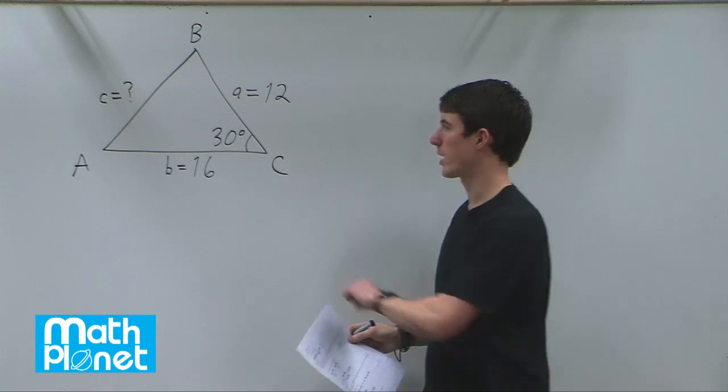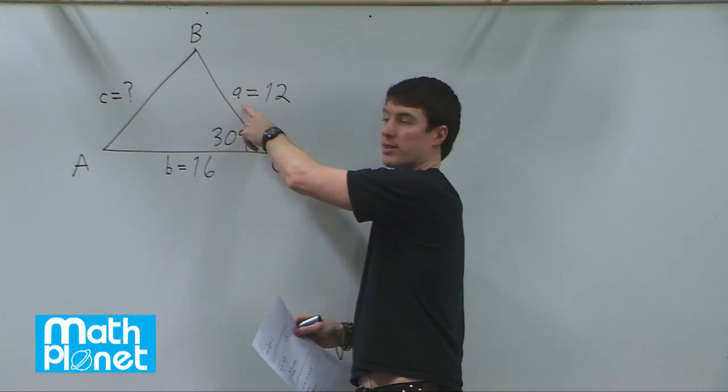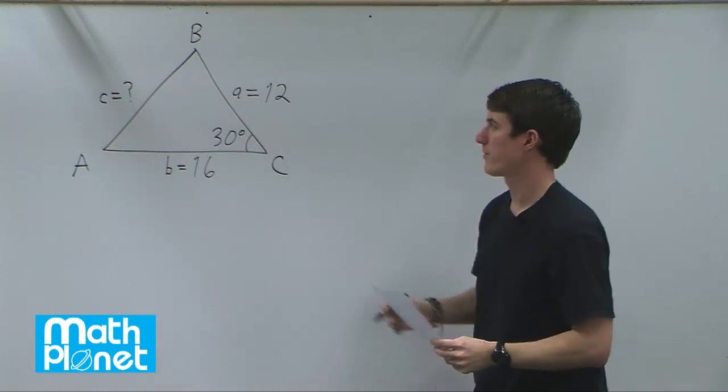So we've labeled it in the normal way where this angle capital A is opposite this length lowercase a, etc. So we want to find length c.